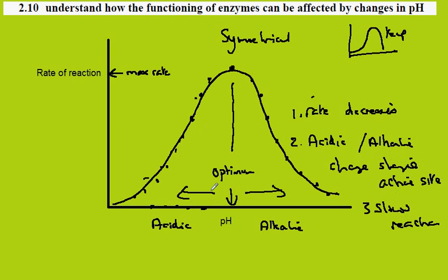At these pHs, we change the active site and it gradually slows down. If we repeat the reaction at more extreme pHs, it slows down more and more. At the optimum pH, the enzyme works optimally. It should be noted that the optimal pH is not necessarily 7.